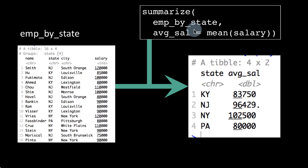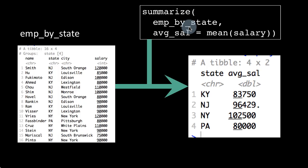You can see the parallel between this and ggplot. In ggplot, you produce a scatter plot of the entire data and you see one plot. But if you add a facet, then you see one plot for every value of the variable by which you've done the faceting. It's exactly like that here — if you summarize on an ungrouped tibble, you get one summary; if it's grouped, you get one summary per group.